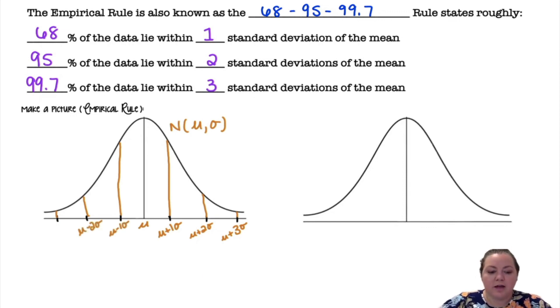As I move to the left I'm subtracting one standard deviation each time. All right, 68% of the data are plus or minus one standard deviation from the mean. 95% are plus or minus two standard deviations, and 99.7 is plus or minus three standard deviations.